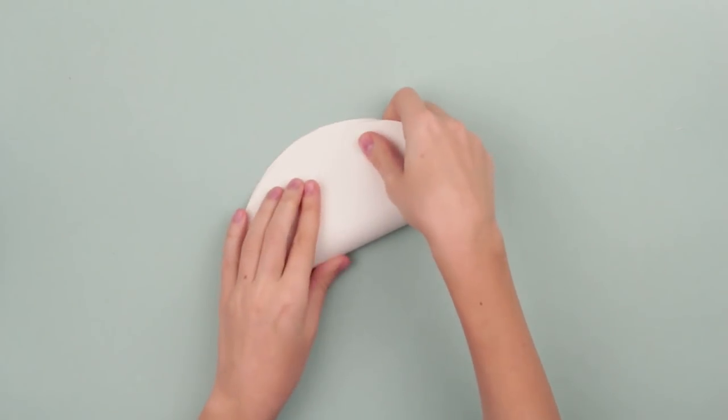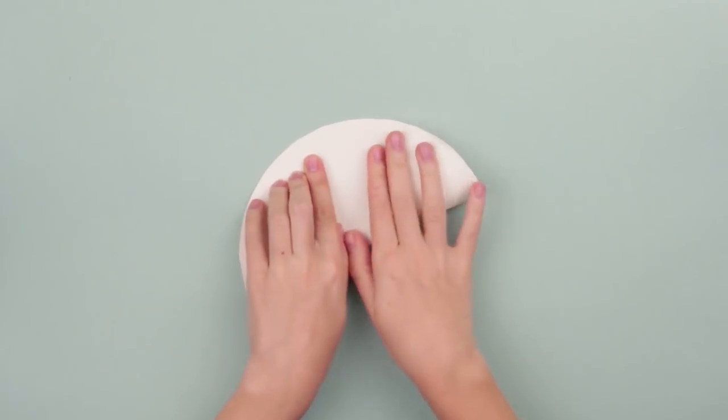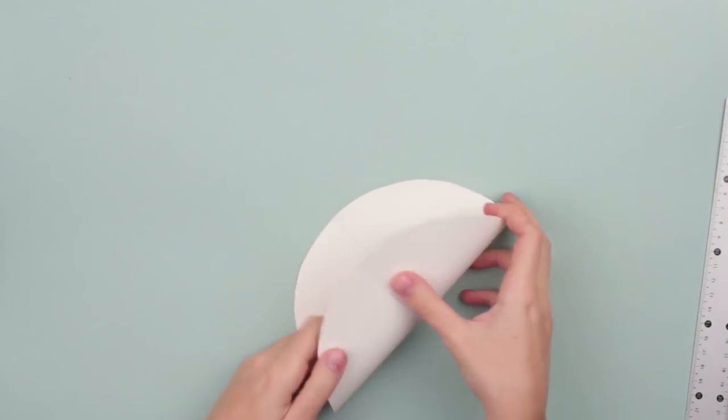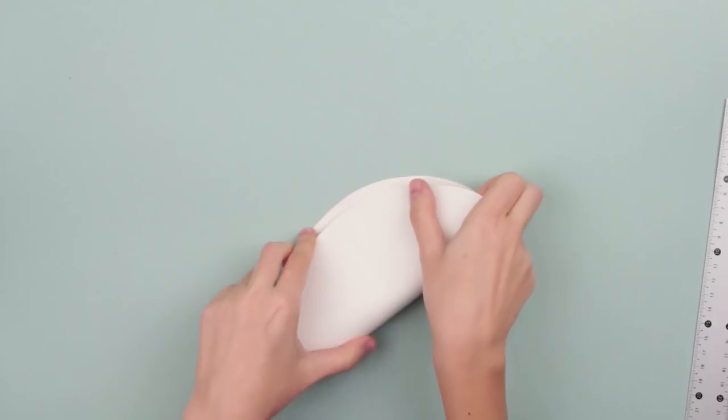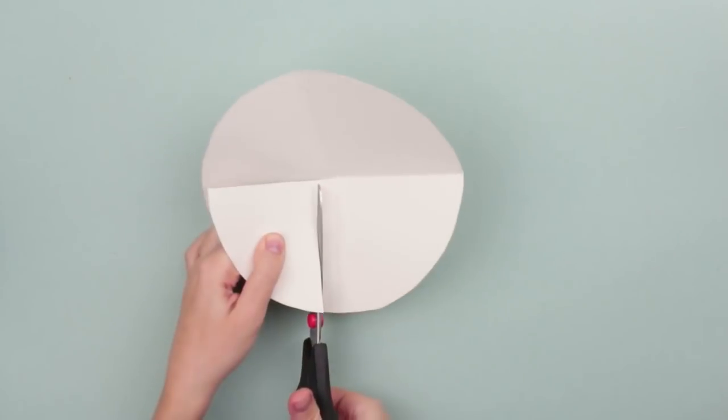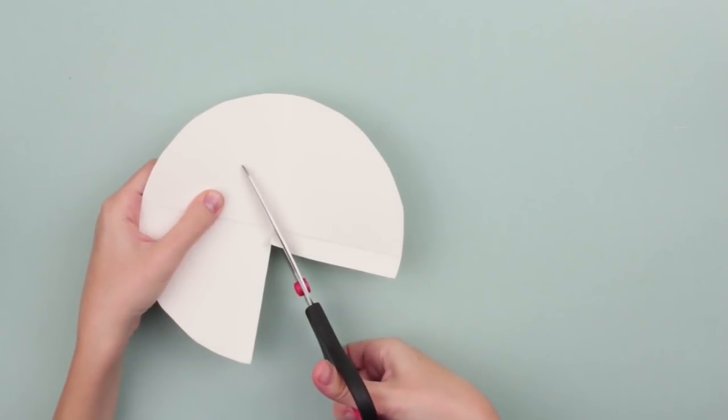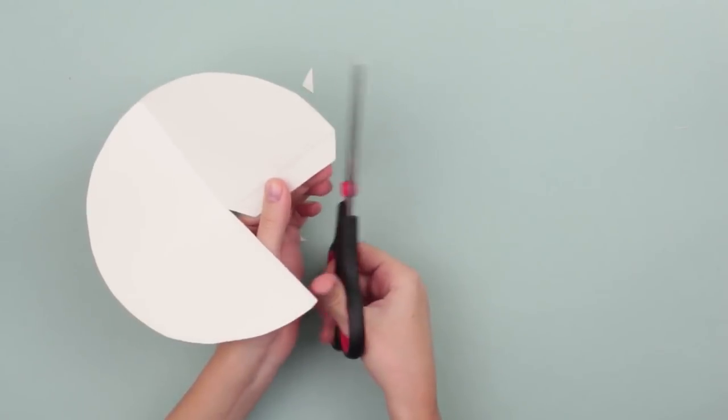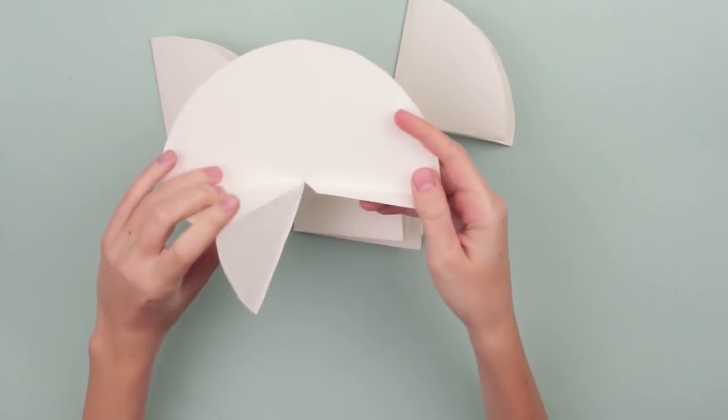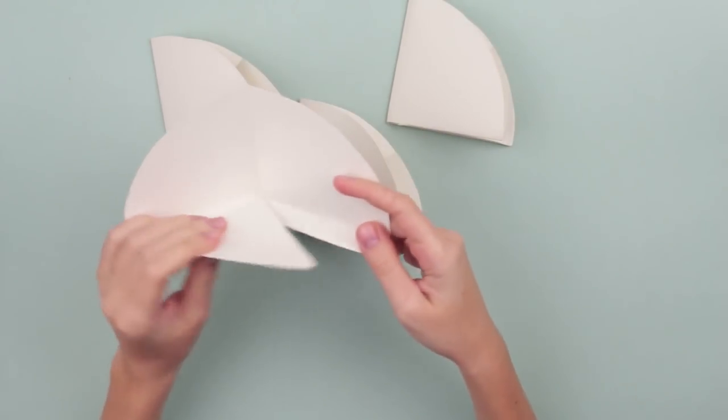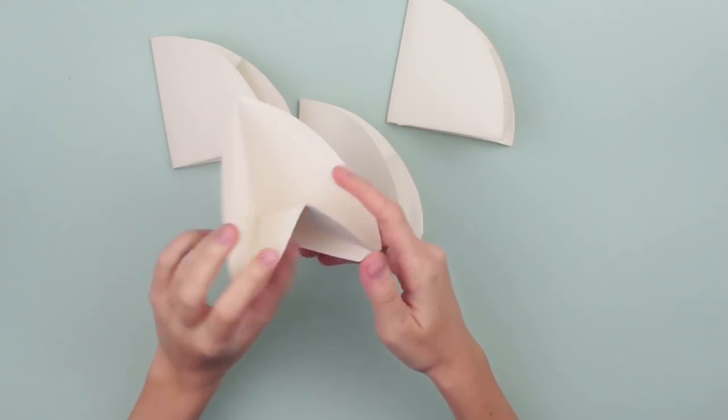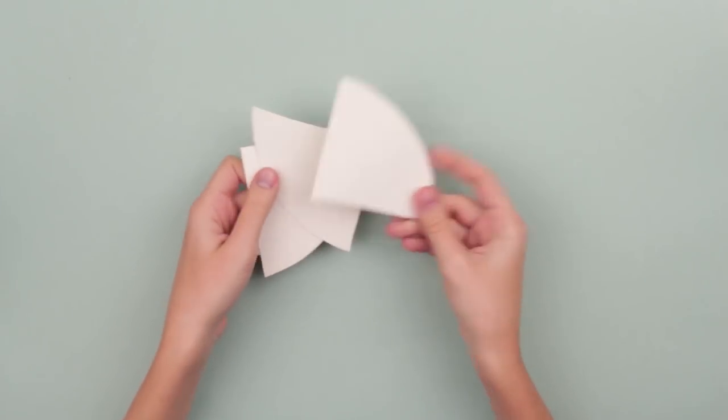Make three more details from the cut circles by following the same steps. When the basic elements are ready, you can start making decoration details. Use a cut piece as a pattern.